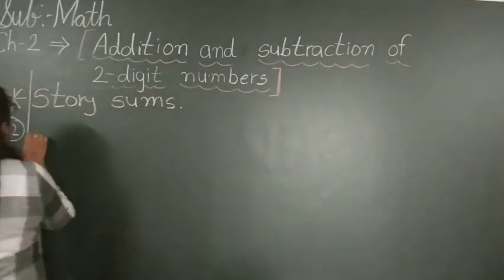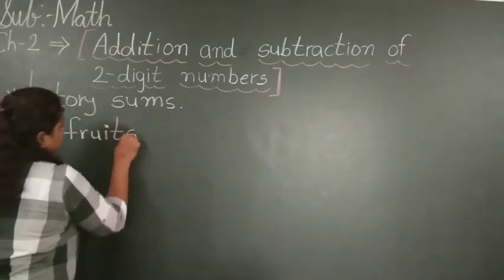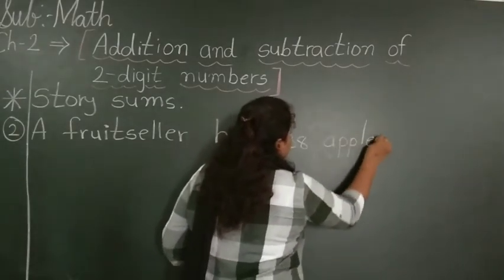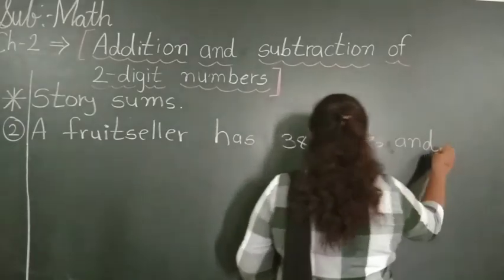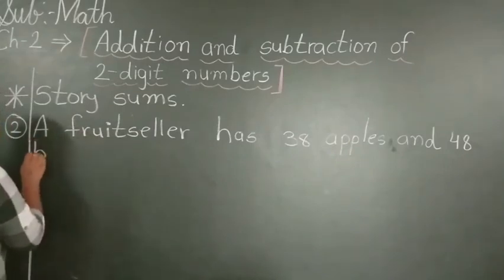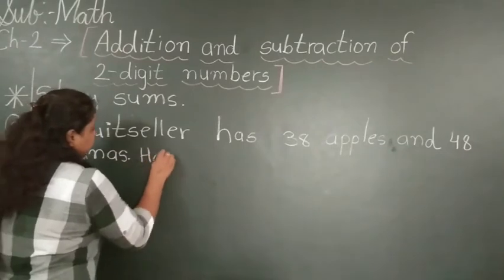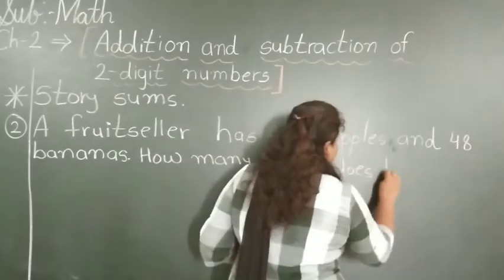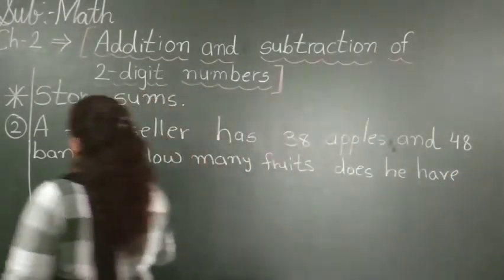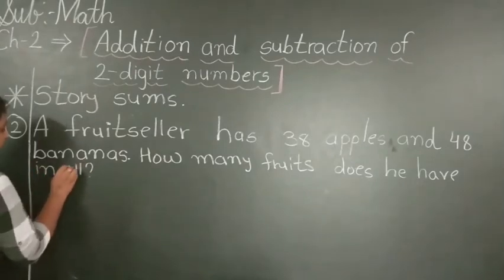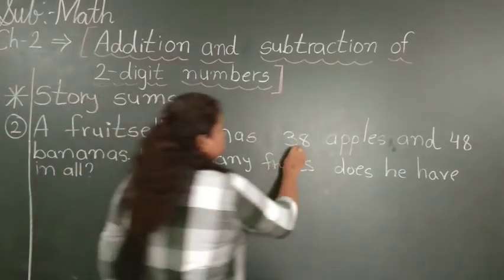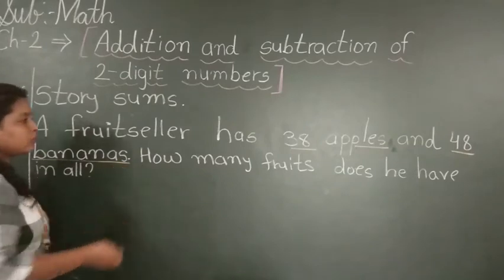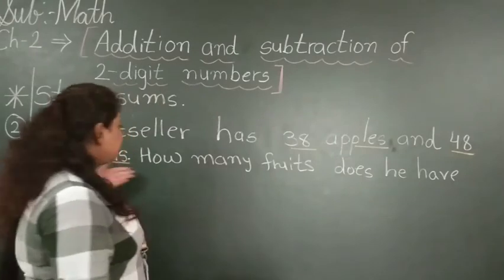So let's start Example Number 2. A fruit seller has 38 apples and 48 bananas. So how many fruits does he have in all? You can see that the important words and numbers are underlined. The numbers you have to take are 38 apples and 48 bananas.